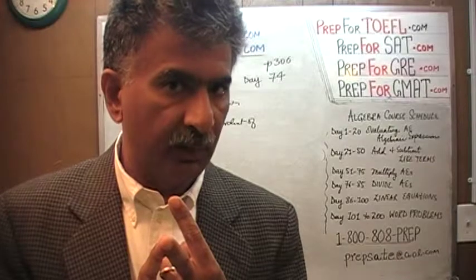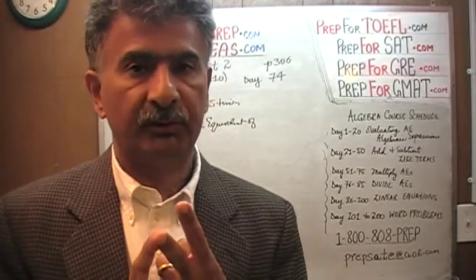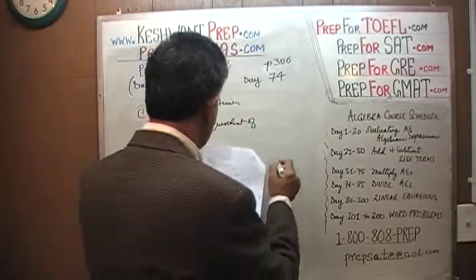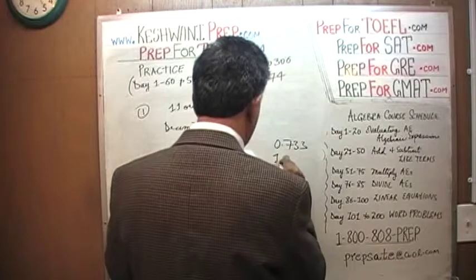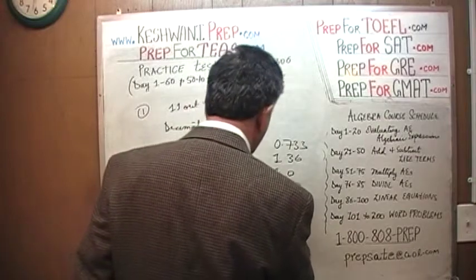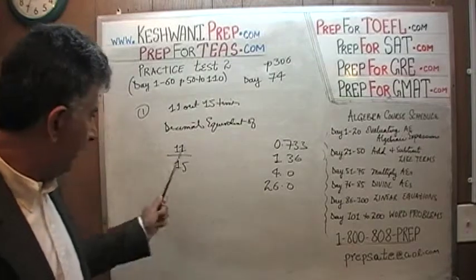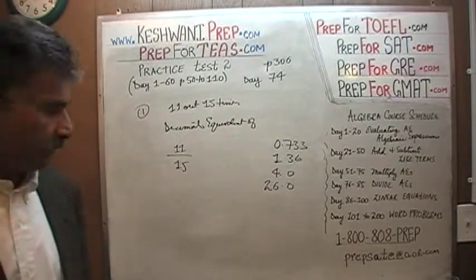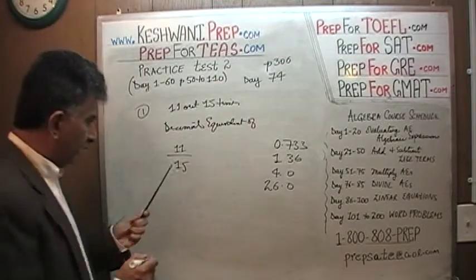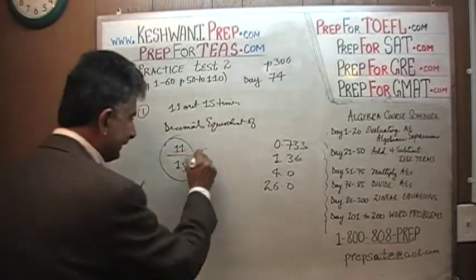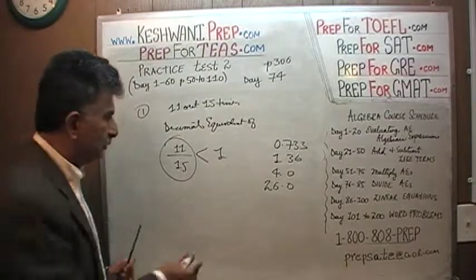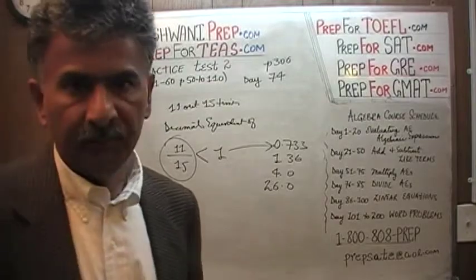The amount of work I'm going to put into a problem is dictated by how the answer choices are presented to me. For example, the answer choices given are 0.733, 1.36, 4.0, and 26. They got 26 by simply adding the two numbers. Now, what do you notice when you look at 11 over 15? You can see immediately that this quantity is less than 1. How many quantities among the answer choices are less than 1? Just one — that's it. The answer is A. You don't have to do anything. Don't waste your time.